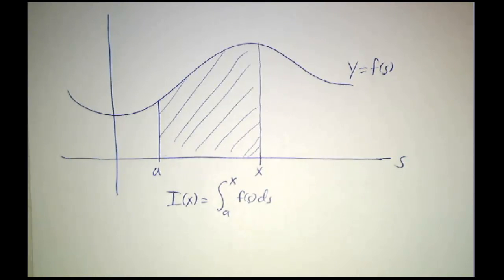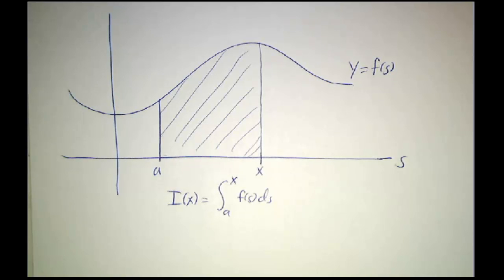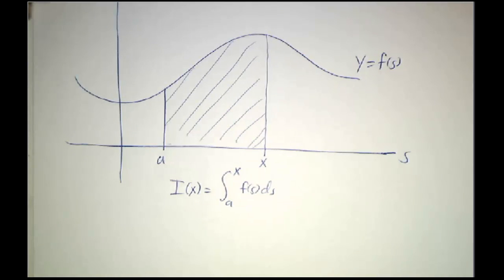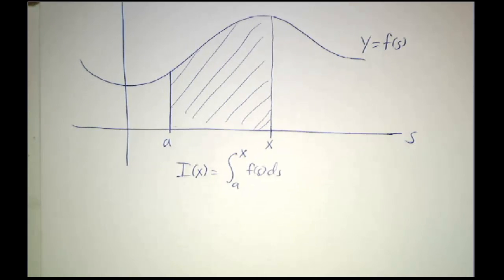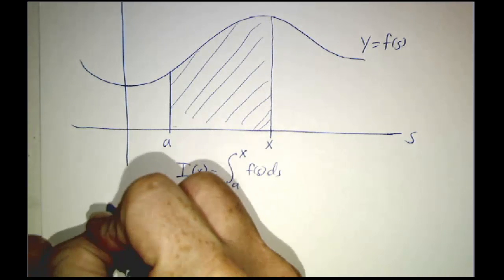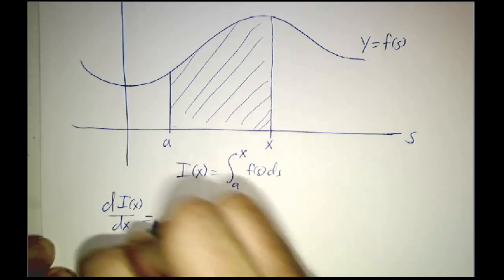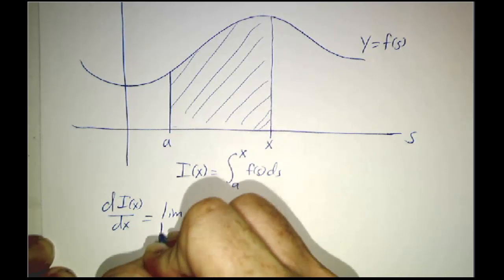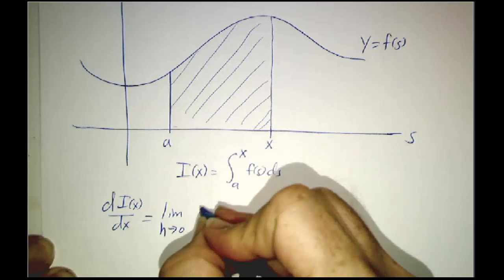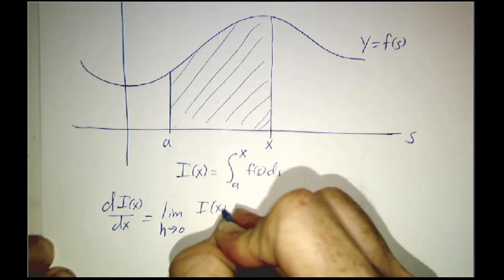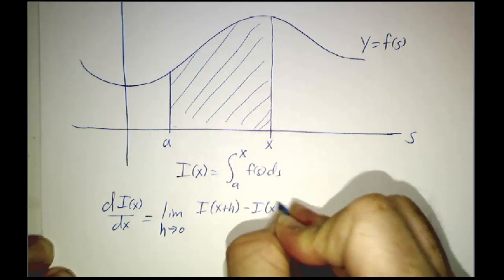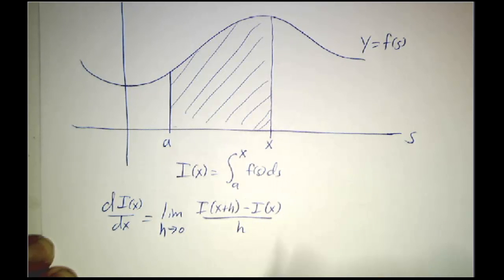So let's go ahead and see if we can take the derivative of this. We're not going to use any of our derivative formulas like the derivative of x cubed or the chain rule or the product rule or the quotient rule. We're going to go back to the definition of the derivative. The derivative of I of x is the limit as h goes to 0 of I of x plus h minus I of x divided by h.